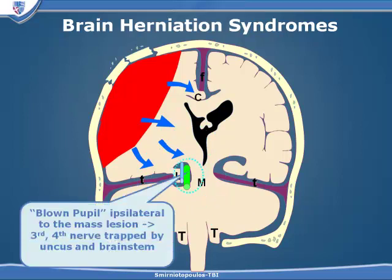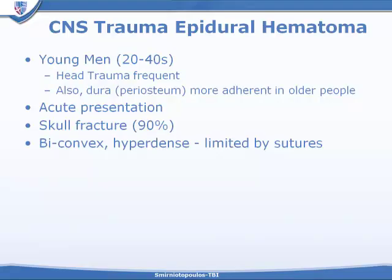This causes herniation of the cingulate gyrus and herniation of the uncus into the circummesencephalic cistern between the quadrigeminal cistern and the supracellar cistern, compressing the nerves that pass through that space. Most importantly, we judge that compression by seeing that the pupil is dilated from pressure against the third nerve, but the fourth nerve or trochlear nerve is also going to be compressed by the same mass effect.